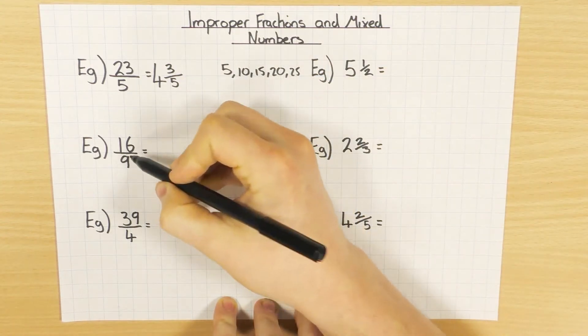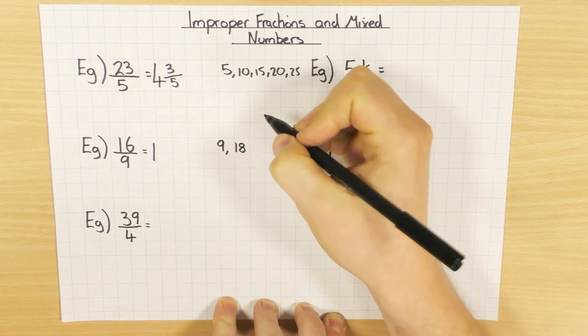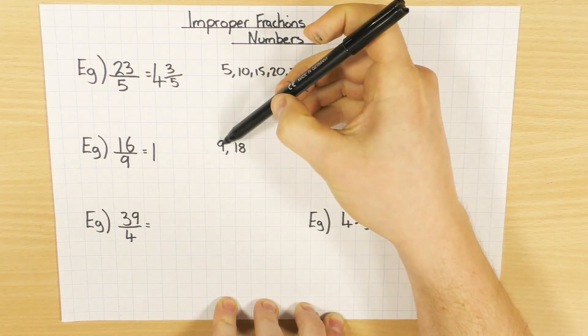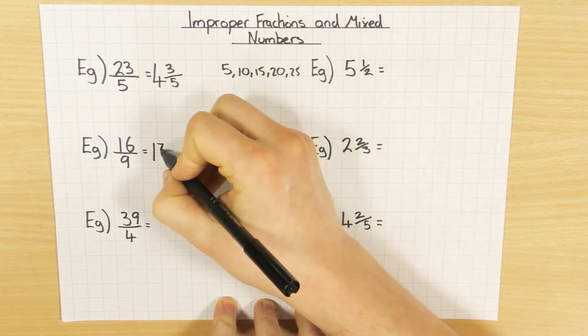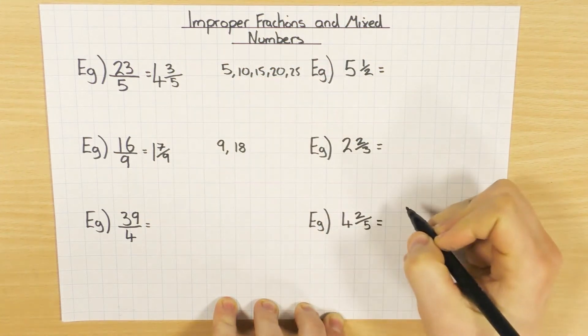So in this particular case, 9 goes into 16 one whole times, but what's left over? Well, it goes in once, so I'm at 9. What's left over to get to 16? So 7, and your denominator stays the same.